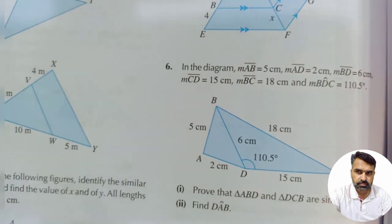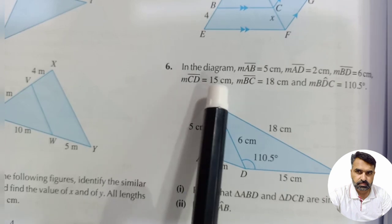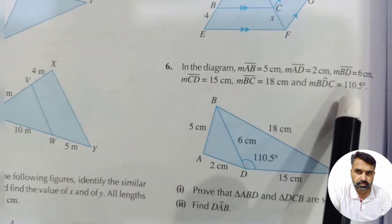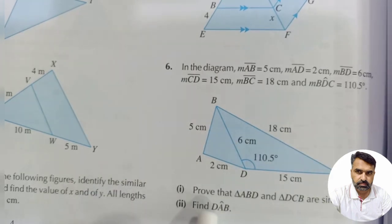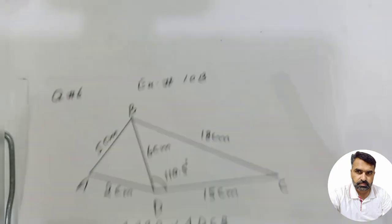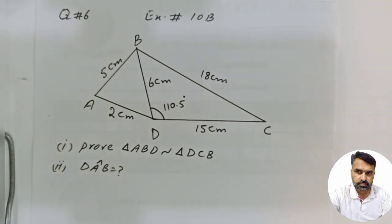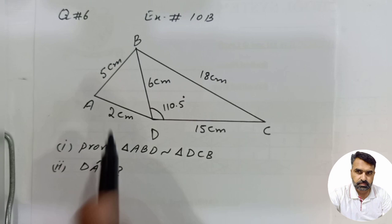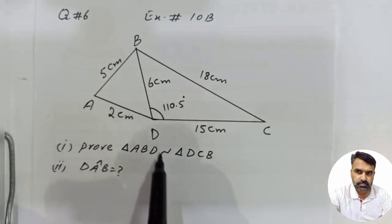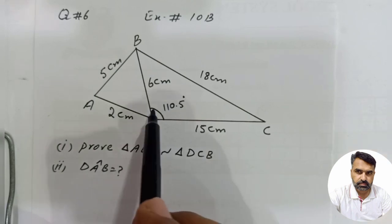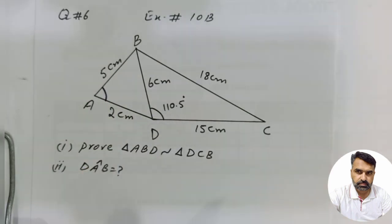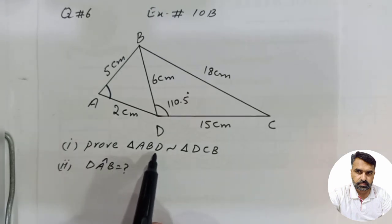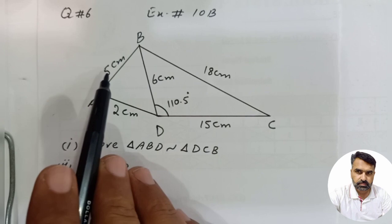The statement of the question is: in the diagram, dimensions are given and angle is also given. We have to prove that triangle ABD and triangle DCB are similar, and then we have to find the angle A value. In this sequence we have to find the corresponding sides.